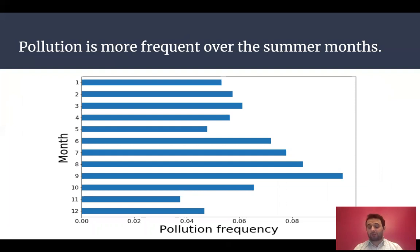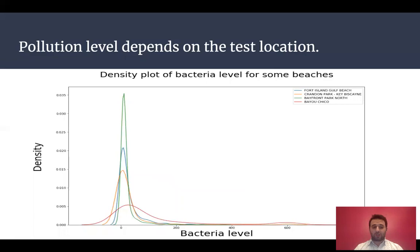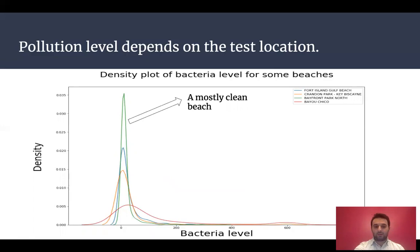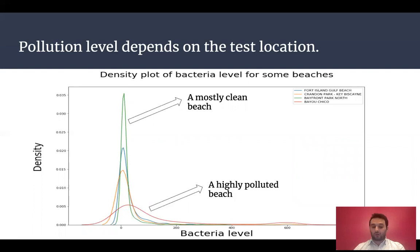When we look at the data, we see that pollution is more frequent over the summer months, likely due to high temperature and high population during summer in Florida. Also, when we look at beaches, pollution level really depends on the beach. Here you can see the density plot for bacteria levels of four beaches — one is a very clean beach with bacteria level near zero, while another is a highly polluted beach with bacteria levels dense on the higher side.